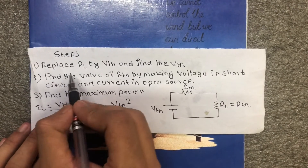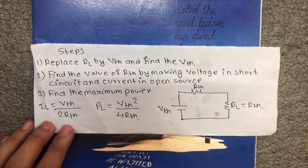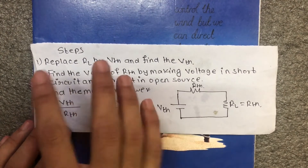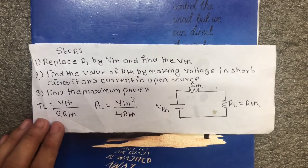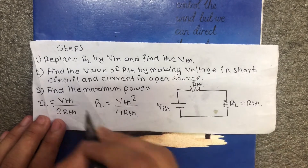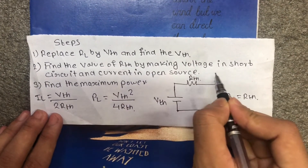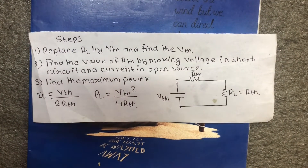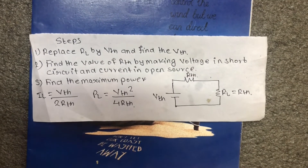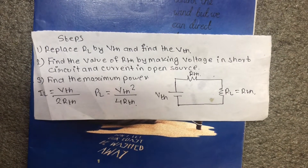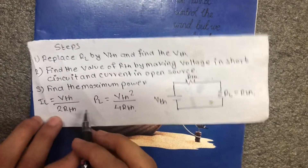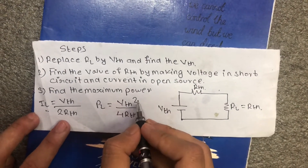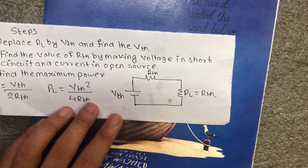First, replace RL by the open circuit terminals. Find the value of Rth by making voltage sources short circuit and current sources open circuit. Then apply the Thevenin theorem: first find Rth, making current sources open and voltage sources short circuit, and then find power.